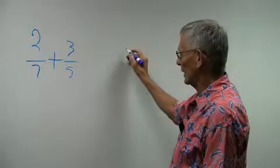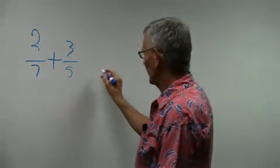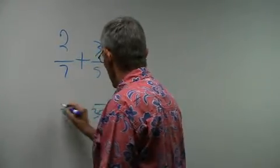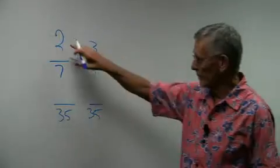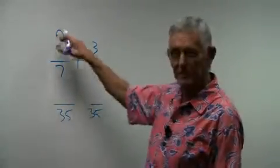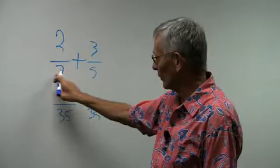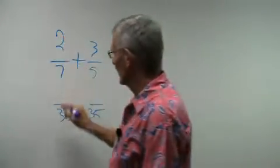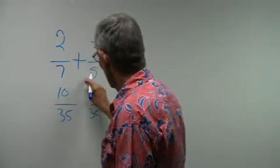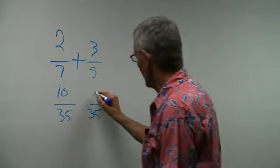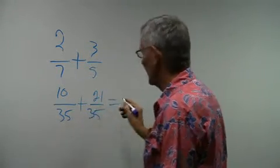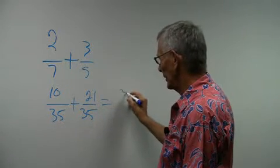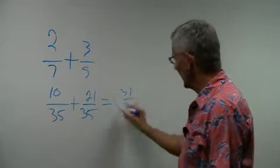So for five and seven, what would be the lowest common denominator? One way is to multiply the two together, which gives me 35. Then convert the fractions into equivalent fractions. Seven goes into 35 five times — multiply by the numerator three, that gives me 15... wait — five goes into 35 seven times, three times seven is 21. Seven goes into 35 five times — two times five is 10. I get a total of 31 thirty-fifths, and that's my answer.